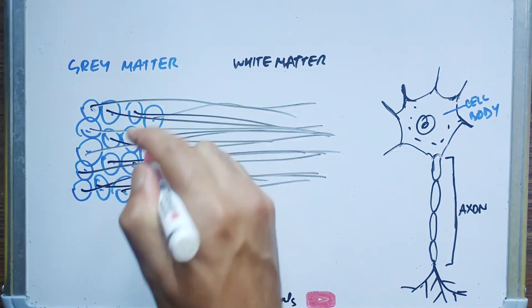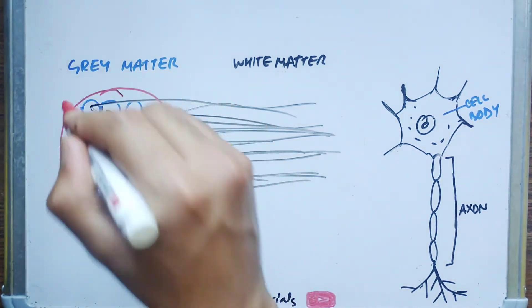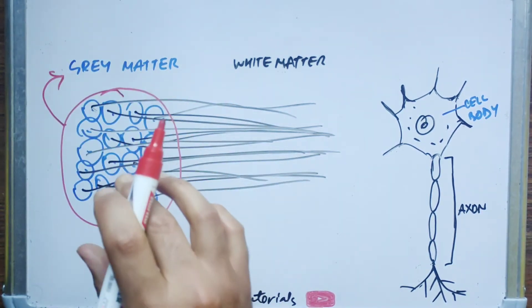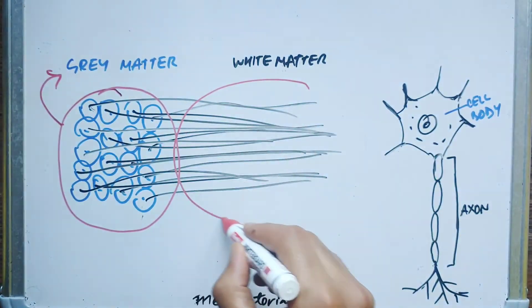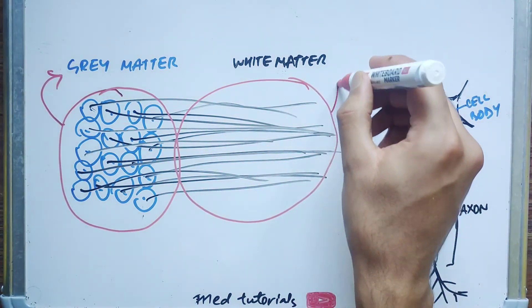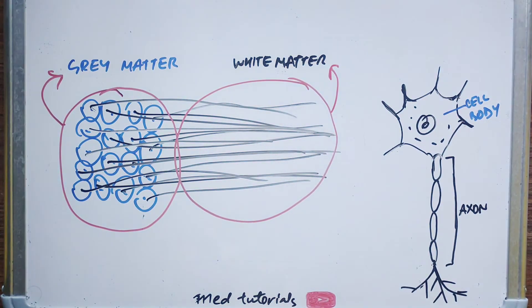Now this collection of cell bodies within the central nervous system is called grey matter. And this collection of axons of neurons within the central nervous system is called white matter.